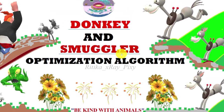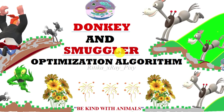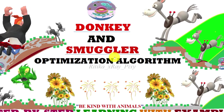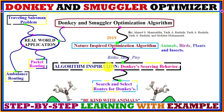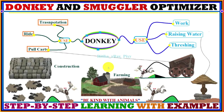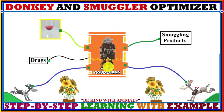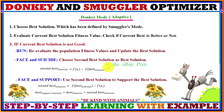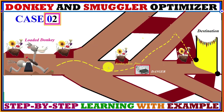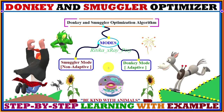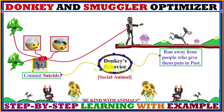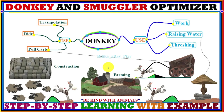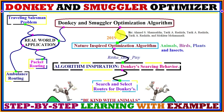This video is based on a new metaheuristic optimization algorithm named the Donkey and Smuggler Optimization Algorithm. In this video we will try to understand what this algorithm is all about, how it is working, the various steps used in this algorithm, mathematical models, flowchart, how we can update an agent's position in the search space, and how we can find out the optimal solution for different optimization problems.